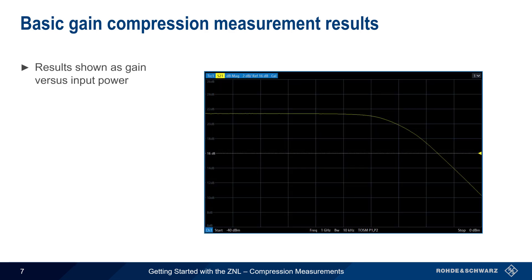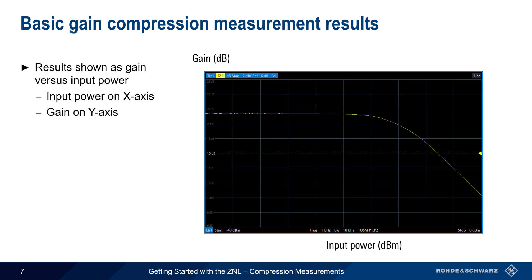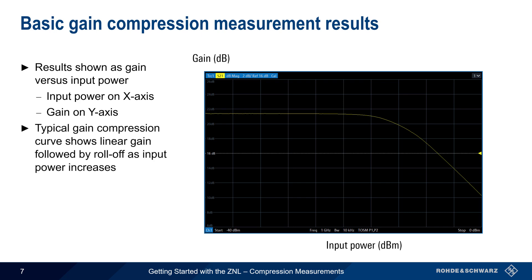The ZNL runs the measurement automatically. Results are shown as a graph of gain versus input power. That is, the x-axis shows input power in dBm, and the y-axis shows gain in dB. The example shown here is a typical gain compression curve, which shows linear gain at lower power levels, followed by a decrease or roll-off of gain as input power is increased.